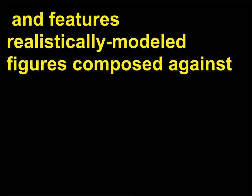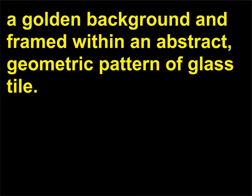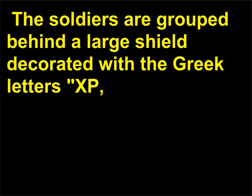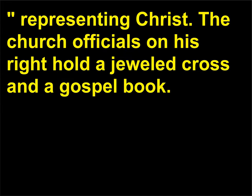It features realistically modeled figures composed against a golden background and framed within an abstract geometric pattern of glass tile. The haloed figure of Justinian is in the center, flanked by his ecclesiastical personnel on his left, and both civil and military personnel on his right. The soldiers are grouped behind a large shield decorated with the Greek letters XP, representing Christ.